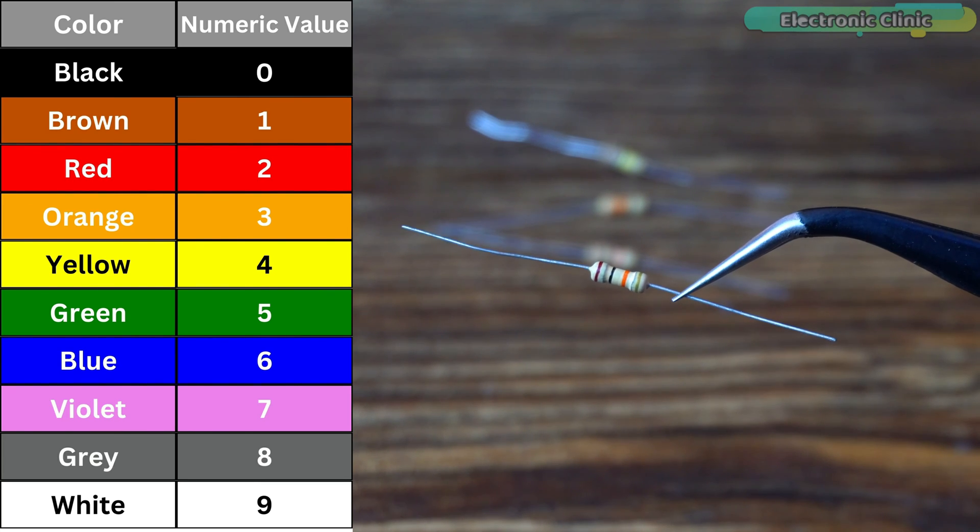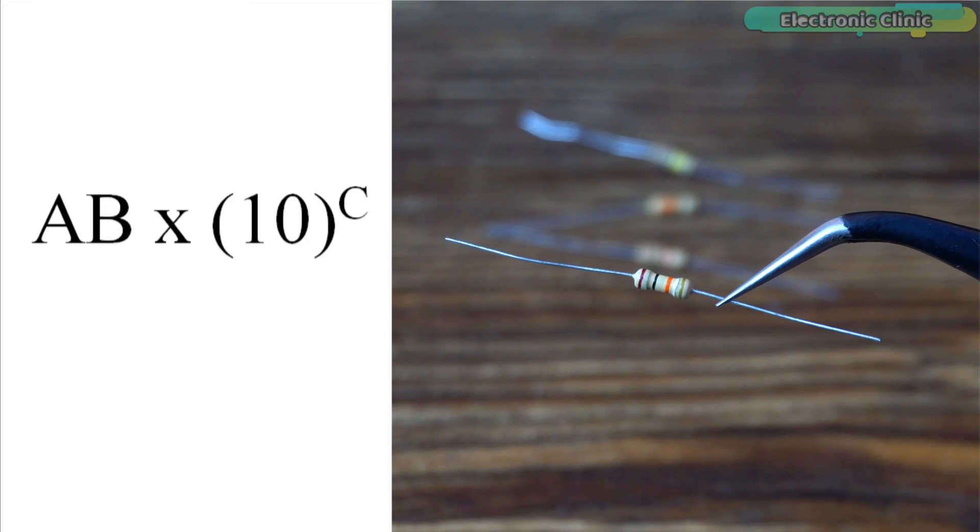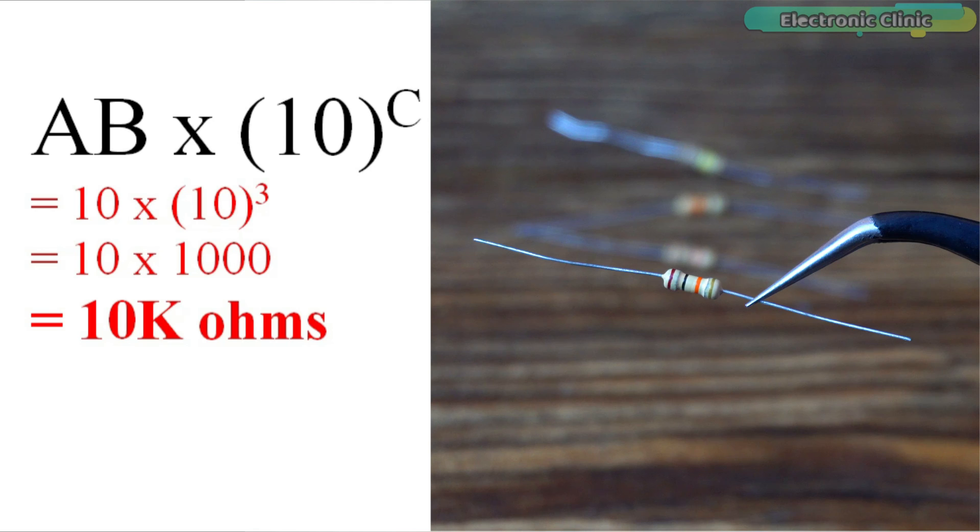The colors are brown, black and orange. As per the table brown equals one, black equals zero and orange equals three. As per the formula where A and B represents the two digits and C represents the multiplier, this resistor is 10 kilo ohms.